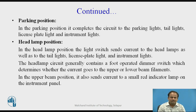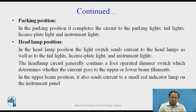In the parking position, it completes the circuit to the parking lights, tail lights, license plate light, and instrument lights. In the headlamp position, the light switch sends current to the headlamps as well as to the tail lights, license plate light, and instrument lights. The headlamp circuit generally contains a foot-operated dimmer switch which determines whether the current goes to the upper or lower beam filaments. In the upper beam position, it also sends current to a smaller red indicator lamp on the instrument panel.